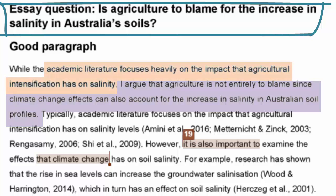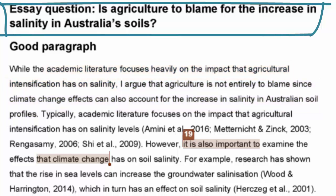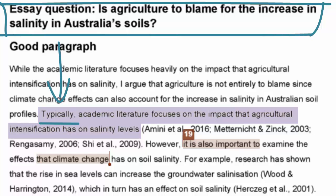Also, the student has used more paraphrasing and phrases to show their critical analysis. This makes their writing clearer and more persuasive. For example, when they make the point that 'typically, academic literature focuses on the impact that agricultural intensification has on salinity levels,' they use the word 'typically' to show that this is their observation of a general trend in the literature. The word typically signals that the student is critical of this trend, because it indicates that there are other studies or ideas that are different to this trend.